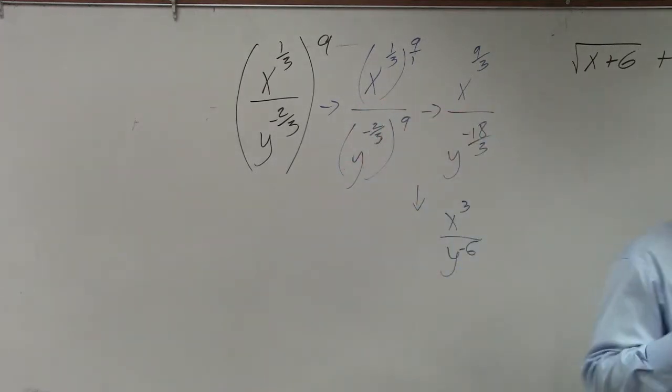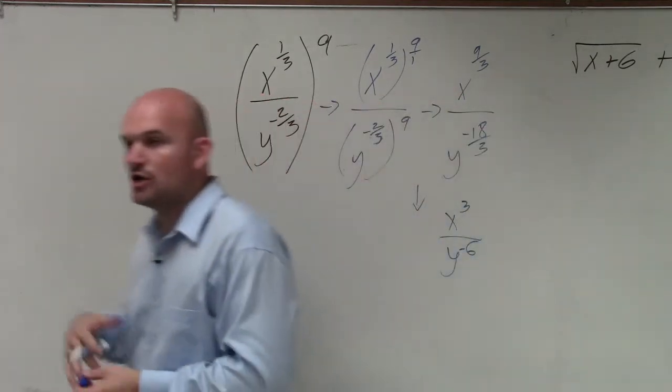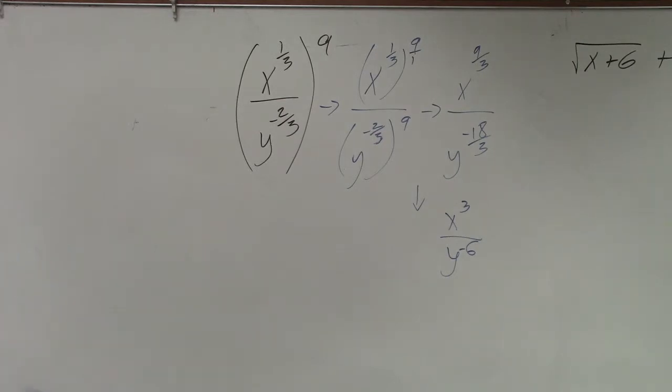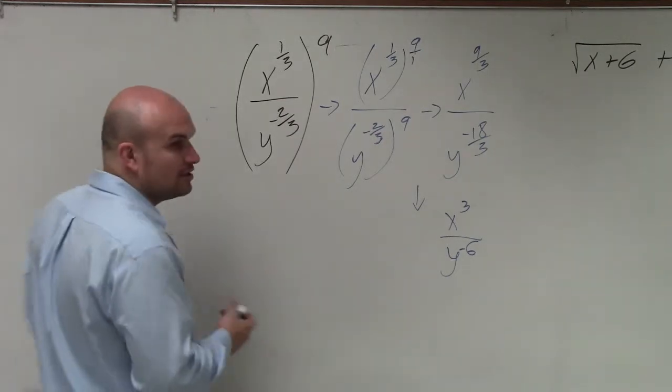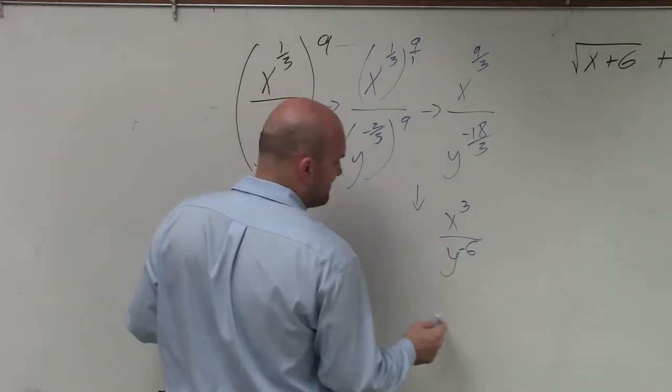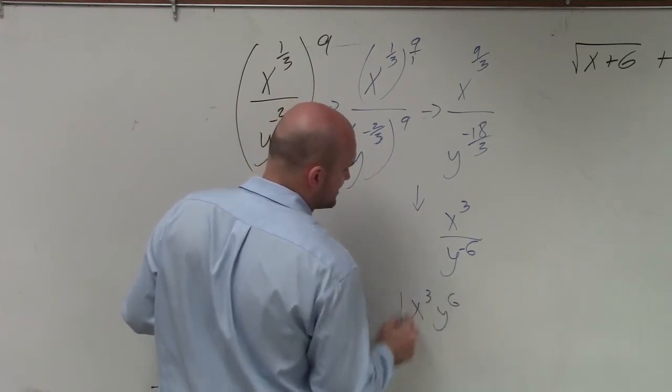Now remember though, we do not want to write our answer with negative exponents. So to rewrite a negative exponent as a positive one, we need to rewrite it as a reciprocal. So my final answer is x cubed y to the 6th.